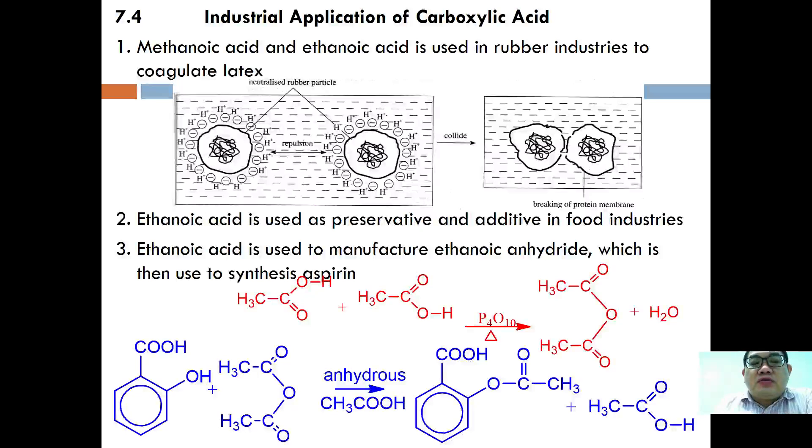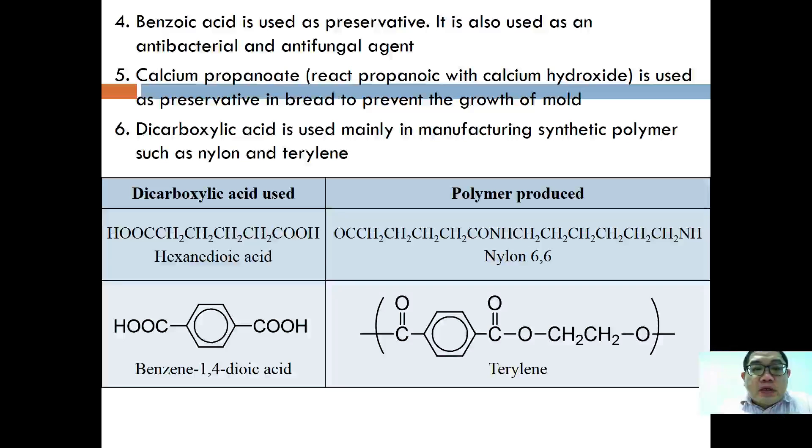Ethanoic acid is also used as a preservative and additive in the food industry. Ethanoic acid is used to manufacture ethanoic anhydride which is then used to synthesize aspirin. This is the reaction equation. Benzoic acid is often used as a preservative and as antibacterial and antifungal agents.